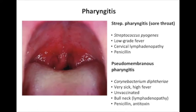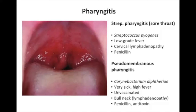Moving higher in the respiratory tree, let's talk about pharyngitis. The main type Step 1 will ask about is regular strep throat caused by Strep pyogenes. This person has scratchy throat pain, low-grade fever, and lymphadenopathy — usually one side but can be bilateral. They're typically not coughing, sick but not horrendously ill. We do give antibiotics because you do not want it progressing to rheumatic fever and rheumatic heart disease.